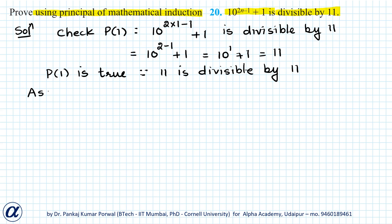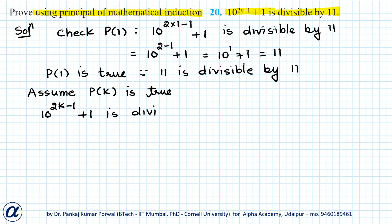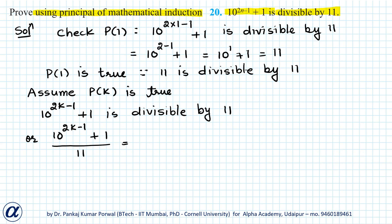Let's assume that P(k) is true. I can get the statement for P(k) by substituting n equals to k in our given expression. So I get 10 to the power 2k minus 1 plus 1 is divisible by 11, or I can say 10 to the power 2k minus 1 plus 1 divided by 11 equals M, where M is some positive integer.